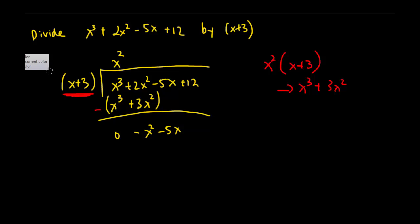Now let's continue. So what do I have to times this function by so that I can eliminate negative x squared? Simple. That will just be negative x. Because negative x into x plus 3, that will just be negative x squared minus 3x. So let's write this down. So that would be negative x squared minus 3x.